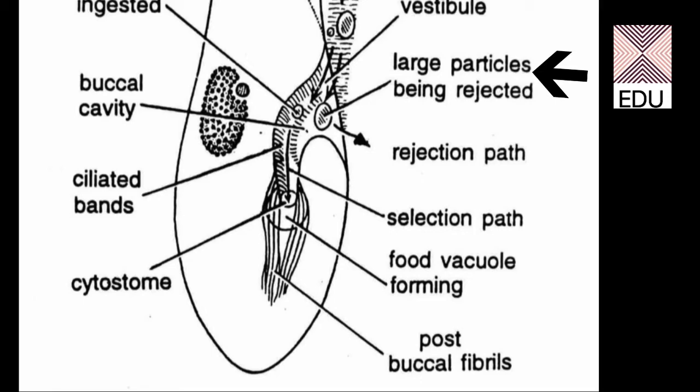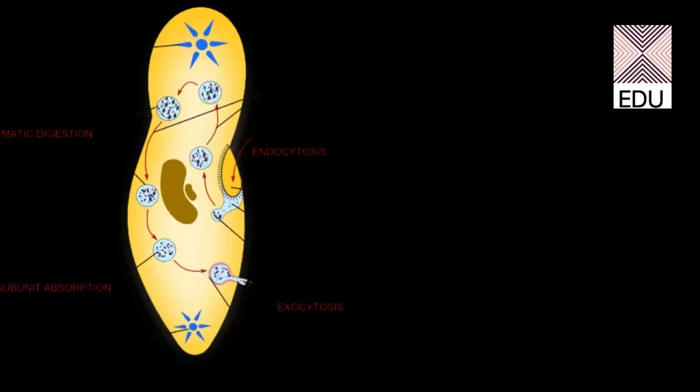Finally, the selected food reaches the cytostome and is given in a food vacuole which pinches off from the cytostome. Now it is free in the cytoplasm. In this diagram, you can see a pinched off food vacuole having the selected food.